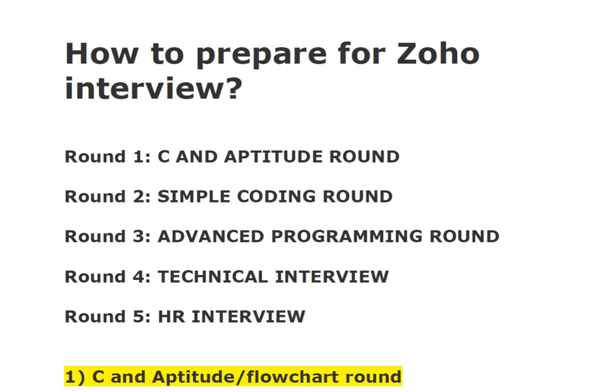Hello friends, today in this video we are going to discuss about the Zoho interview process and how to prepare for it. Zoho conducts 5 rounds for selecting candidates for the role of software development engineer. Previously there were 7 rounds including 2 technical interview rounds and 2 HR interview rounds, but recently they seem to be conducting only 5 rounds. The first round is C and aptitude, the second is simple coding, the third is advanced programming, the fourth is technical interview, and the fifth is HR interview.